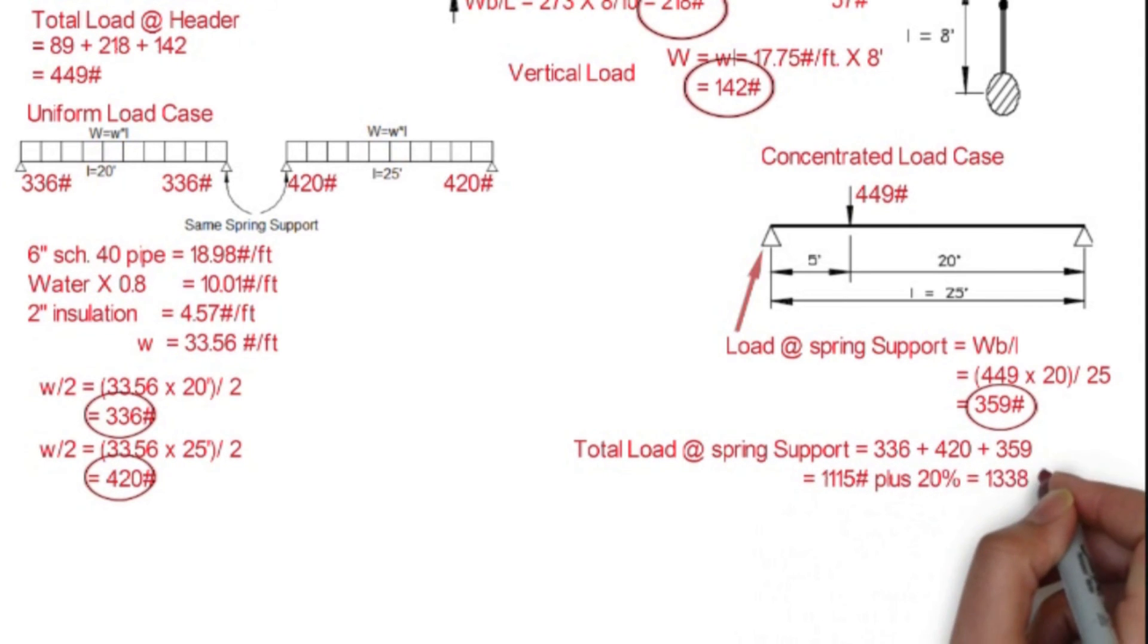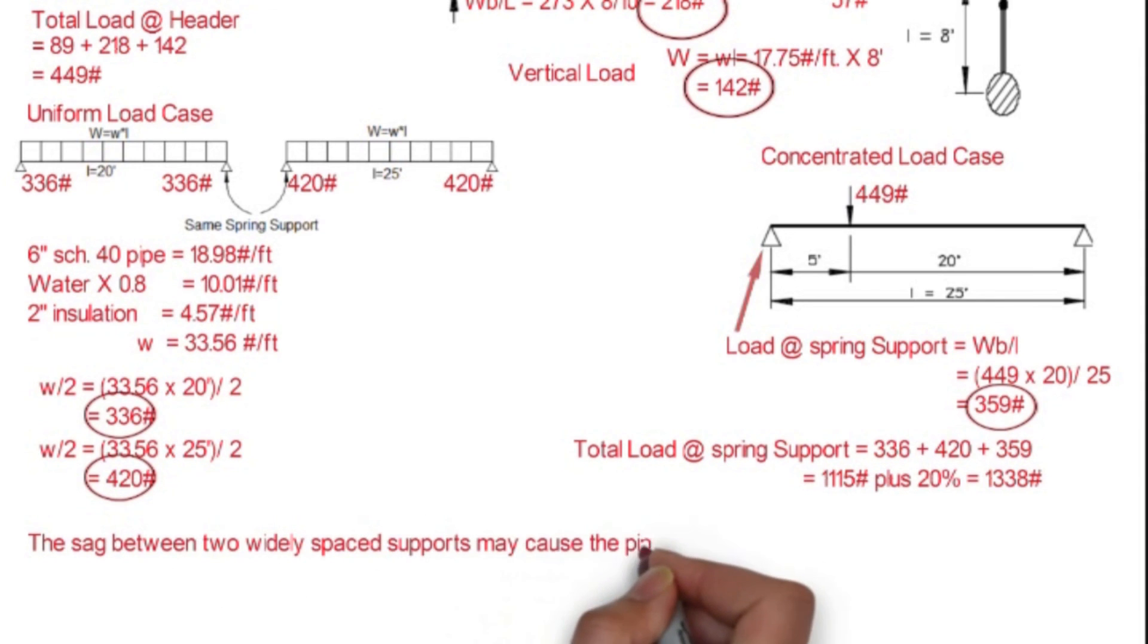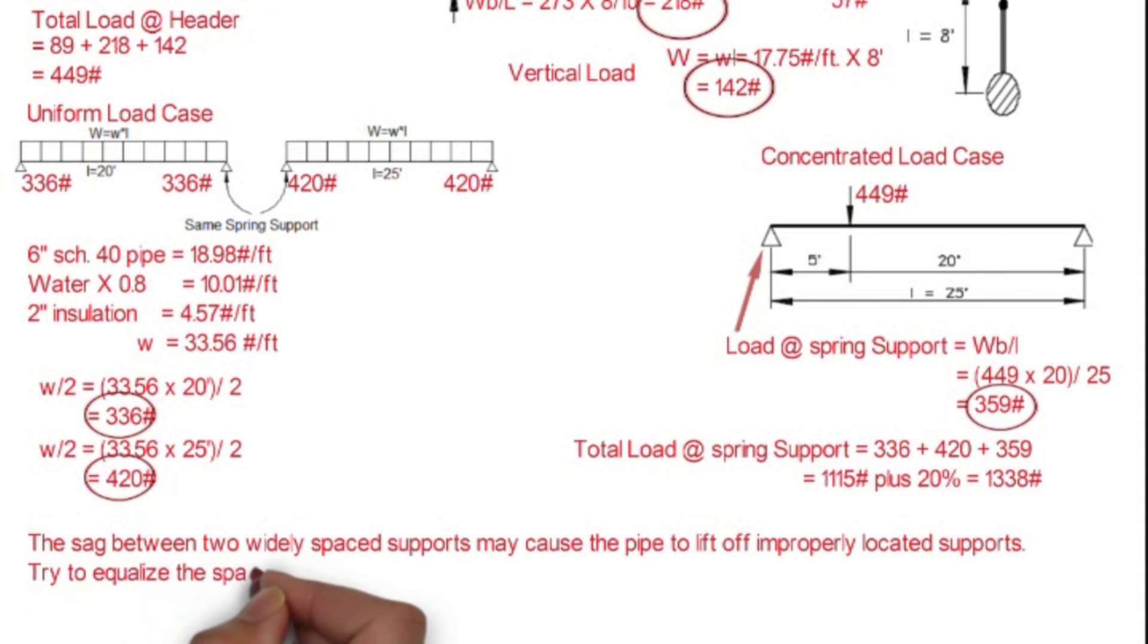The sag between two widely spaced supports may cause the pipe to lift off a properly located support. Try to equalize the span on either side of the support whenever possible, balancing the load.